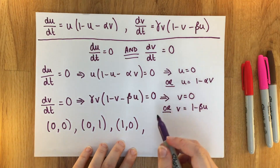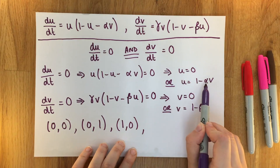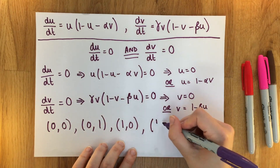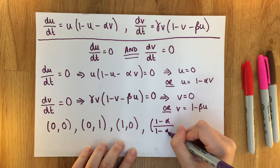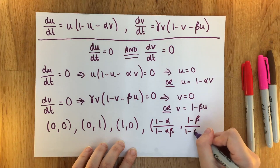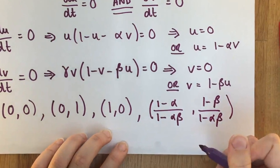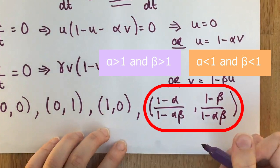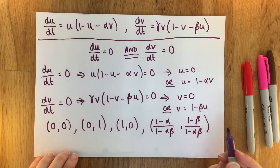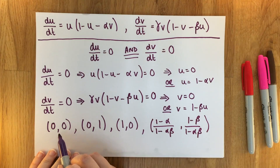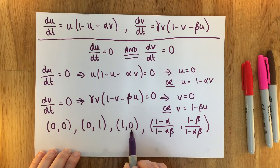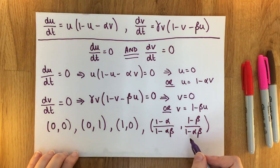Finally, when u equals one minus alpha v and we plug that into the equation at the bottom, after some rearranging we get a fourth steady state at (1 minus alpha)/(1 minus alpha times beta) and (1 minus beta)/(1 minus alpha times beta). The important thing to note is that all steady states must be positive to be physically realistic — a negative population size makes no sense. So this fourth steady state only exists when either alpha > 1 and beta > 1, or alpha < 1 and beta < 1. The steady state (0,0) represents both populations dying out, (0,1) represents the reds dying out with greys surviving, (1,0) is reds surviving with greys dying out, and the final one is coexistence.